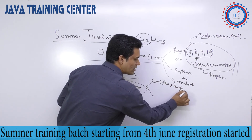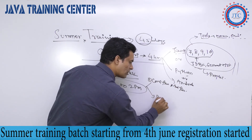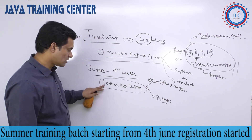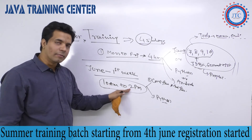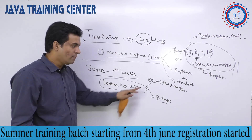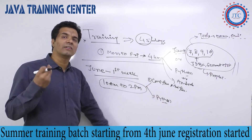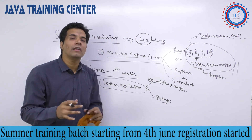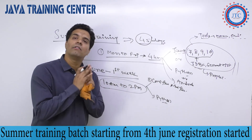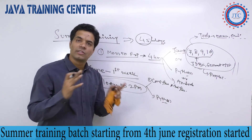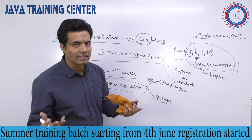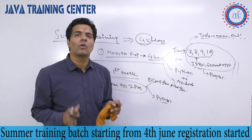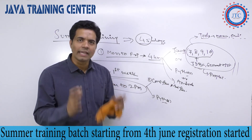We are starting in the first week of June — depending on when college exams end. In Noida, we are starting a batch from 10 AM to 2 PM for Core Java plus Advanced Java, and a separate batch for Python as well. In that 10 to 2 slot, you will have a break. After 2 PM, you will sit in the lab and do practice with different models, programs, and assignments. This is what we have planned for the summer training — thank you.